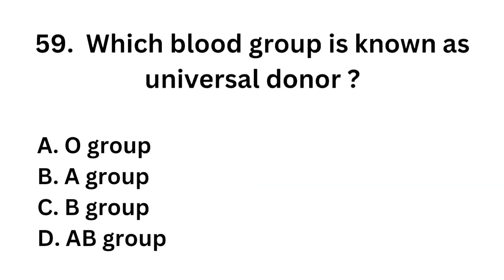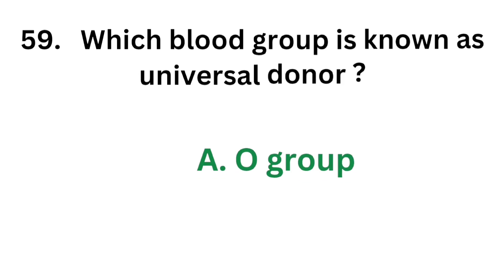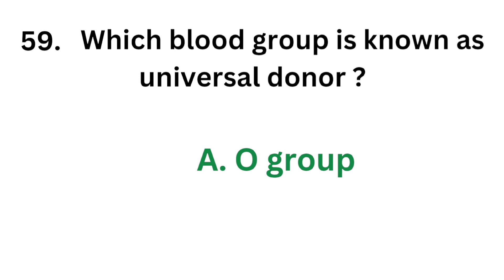Question number 59: Which blood group is known as the universal donor? Option A: O group. Option B: A group. Option C: B group. Option D: AB group. The correct answer is Option A: O group. O group is known as the universal donor.